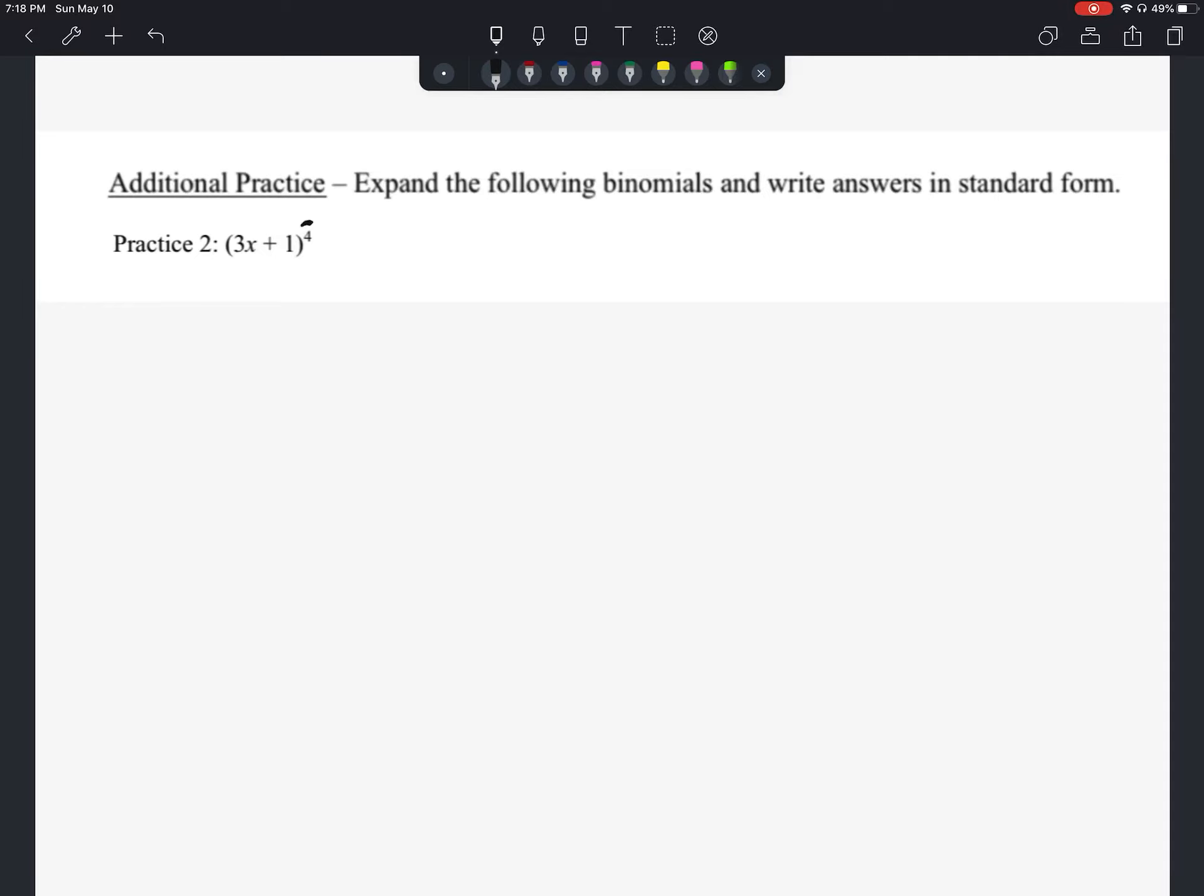So when we are raising something to the fourth power, we know there's going to be five terms. So if you're trying to think of what are the coefficients, again, you can draw Pascal's triangle if you need to. You can look at that reference page.